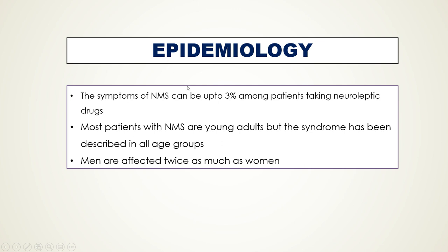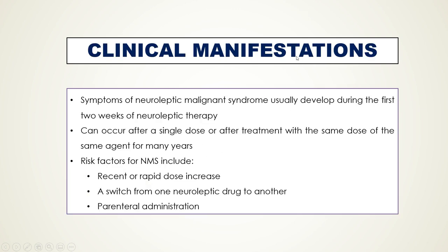The incidence of Neuroleptic Malignant Syndrome can be up to 3% among patients taking neuroleptic drugs. Most patients are young adults, though the syndrome has been described in all age groups, and men are affected twice as much as women. Symptoms usually develop during the first two weeks of starting neuroleptic therapy but can occur after a single dose or after years on the same agent. Risk factors include recent or rapid dose increase, switching neuroleptic drugs, and parenteral administration.